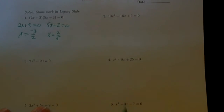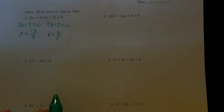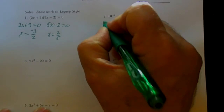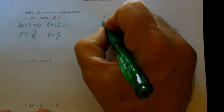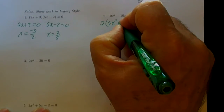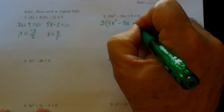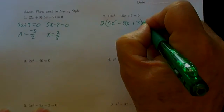Here's the second problem. It's always worth looking to see if you can factor — usually there's less computation and less chance for error. In this case there is a common factor of 2, so let me rewrite this as 2 times (5x squared minus 8x plus 3) equals 0.